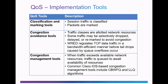Under congestion management tools, when traffic exceeds available network resources or we have congestion, then traffic is queued to await the availability of those resources. Common Cisco IOS-based congestion management tools include class-based weighted fair queuing and low latency queuing, or the CBWFQ and LLQ algorithms.